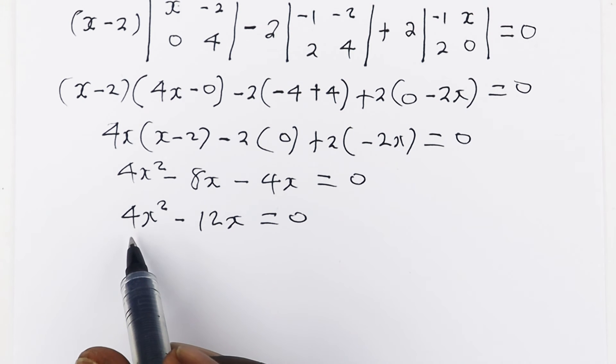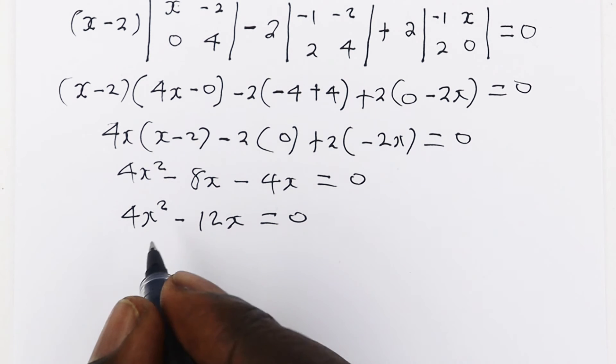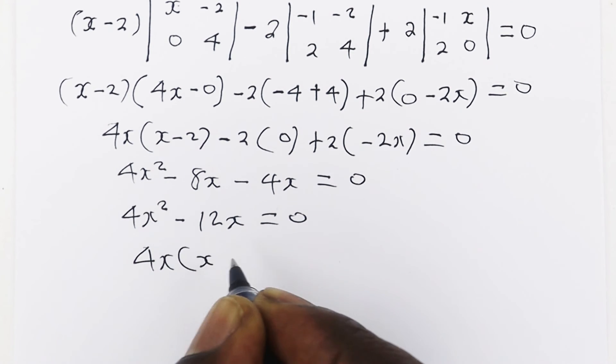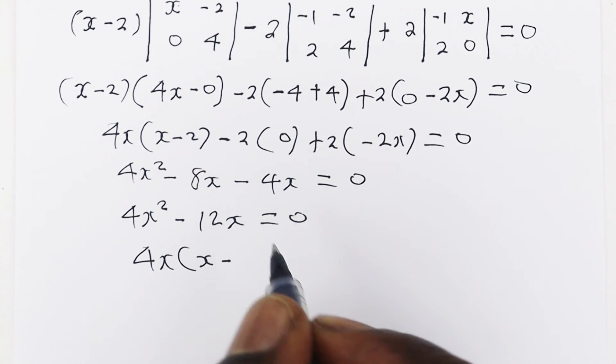We can look for the common factor between these two, which is just 4x. So we have 4x into x, and 4x goes here 3 times, and that's equal to 0.